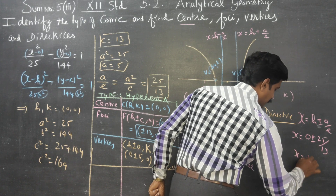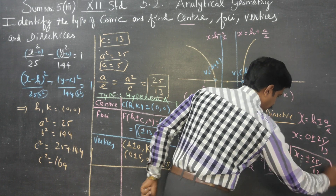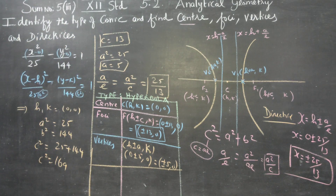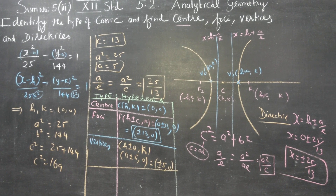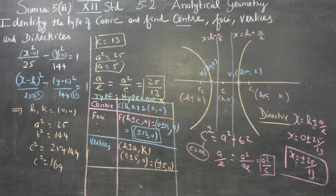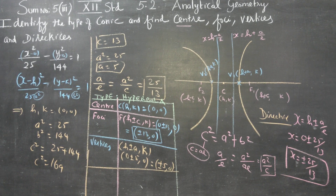Therefore x = ±25/13 is the equation of the directrices. To summarise: centre (0,0), foci (±13, 0), vertices (±5, 0), and directrices x = ±25/13. Thank you.